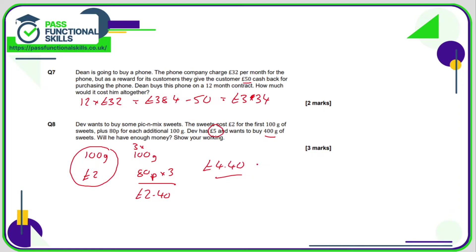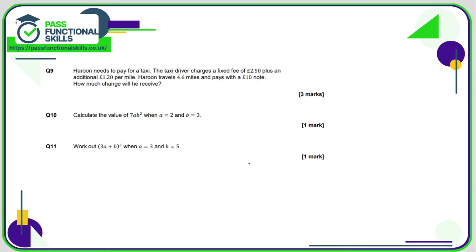Question number nine: the taxi driver charges £2.50 just for stepping inside the taxi and then £1.20 per mile. So if Haroon is doing 4.6 miles, that's going to be £1.20 multiplied by 4.6. One-twenty times 4.6 is £5.52. If we add the £2.50 to the £5.52, that comes to a total of £8.02. If he pays with a £10 note, then £10 minus £8.02 is £1.98 change.